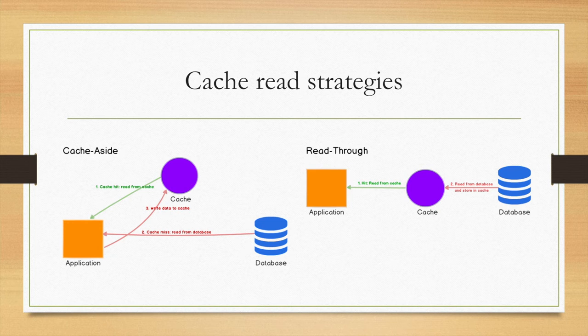For the read-through architecture, application will talk to the cache only. Similarly, if there's no elements in the cache, cache will have a backend thread that goes to the database to get data back.